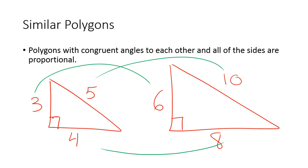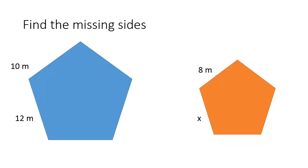This is where you have your AA similarity, your SAS similarity, and all that stuff. But now we're going to expand it to just polygons in general and larger shapes. And those don't really have any shortcuts like your triangles. They're more you have to kind of check.